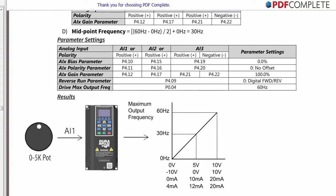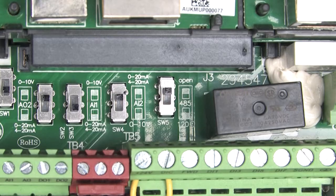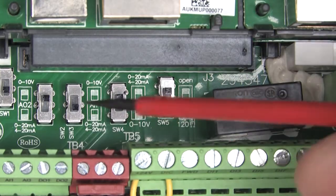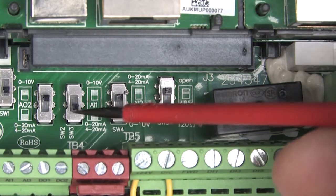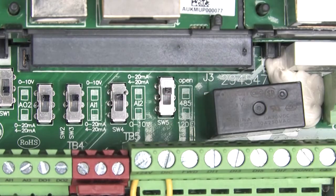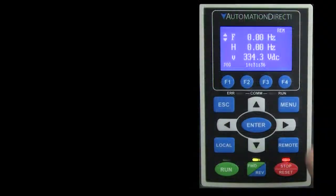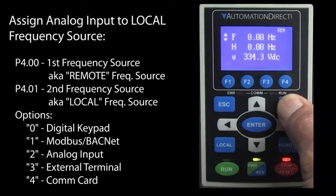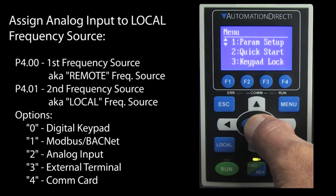Since the potentiometer is applying a voltage, we need to make sure the switch for analog input 1 is set to voltage. Now we need to tell the drive what we are doing.